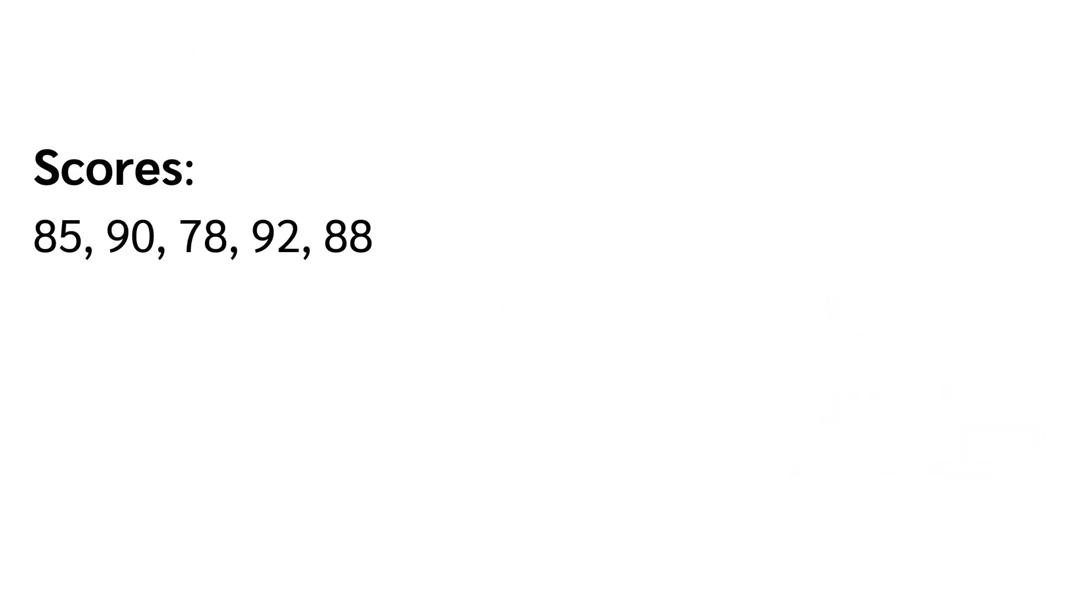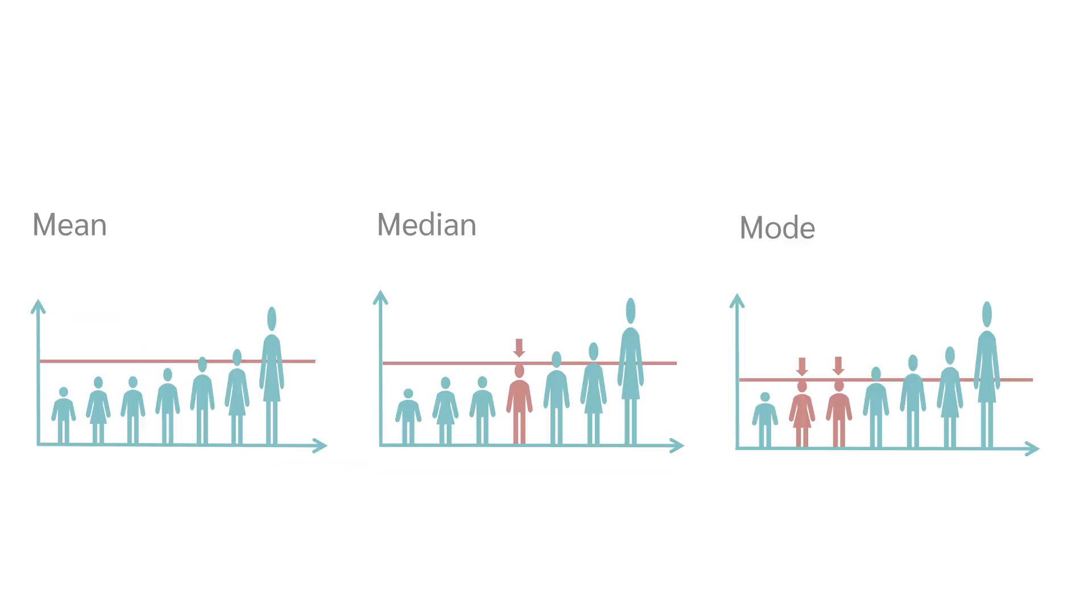Imagine we have the test scores of five students. To find the mean score, we sum up all the scores and divide by the number of scores. The mean test score of these five students is therefore 86.6. What about the median?